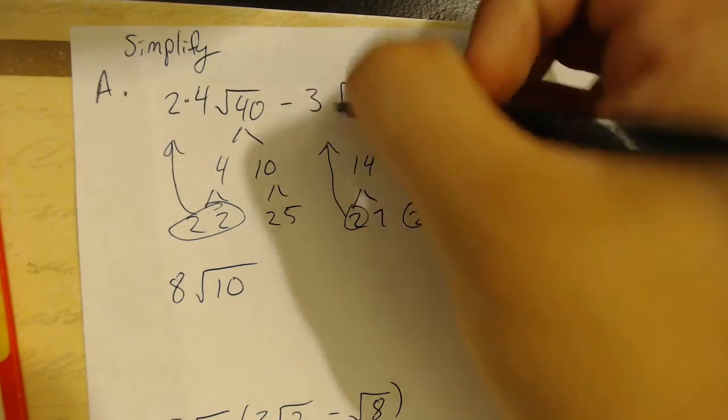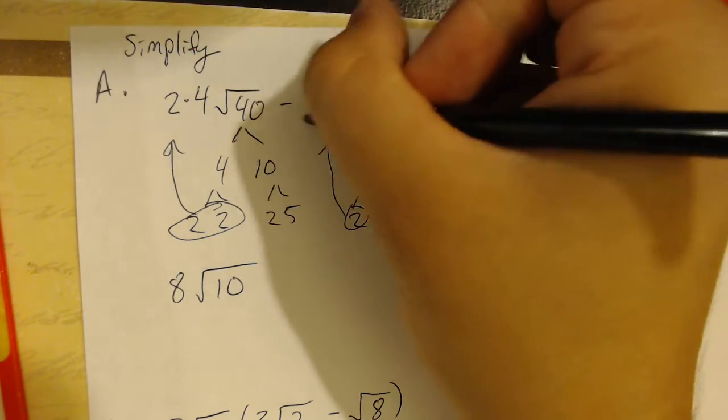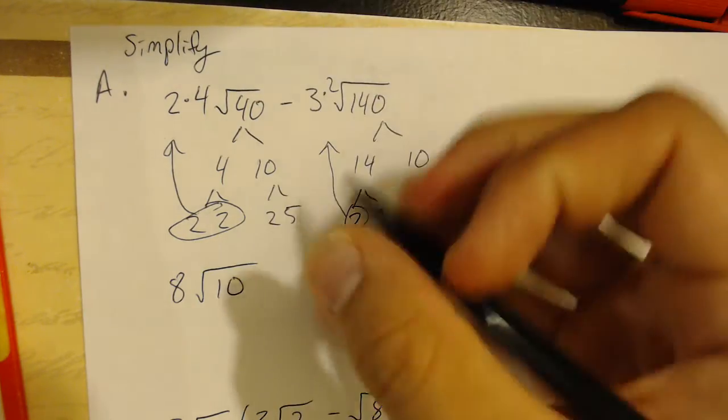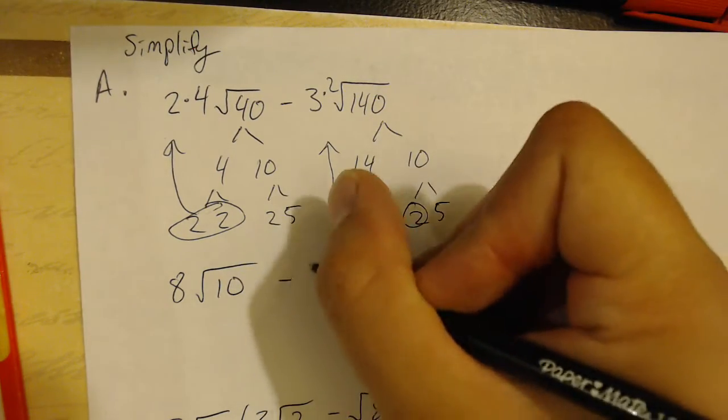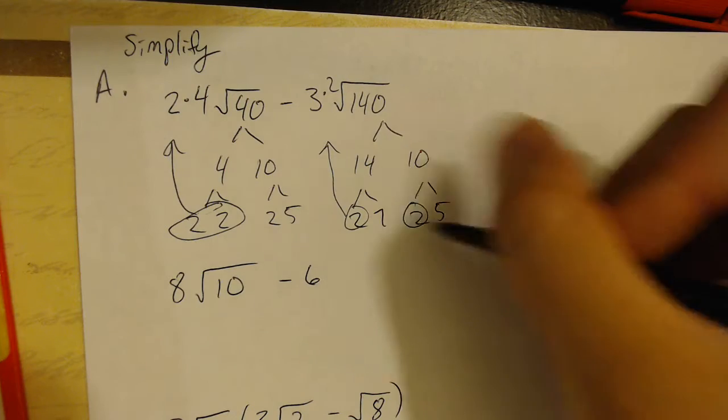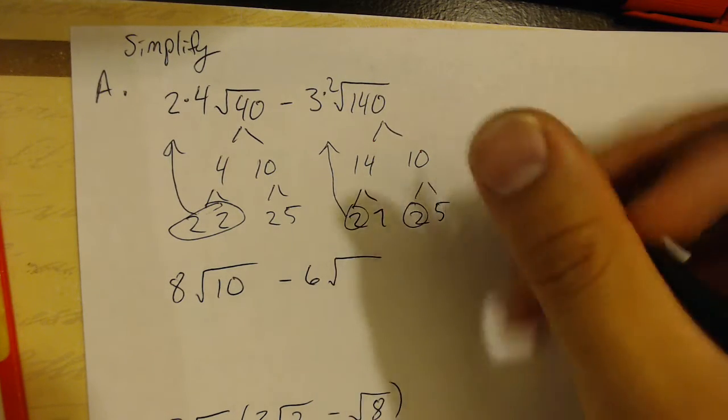They pull out to become 2 times negative 3. So, negative 3 times 2 gives me negative 6. And then the 7 and the 5 are trapped in. So, they become 35.